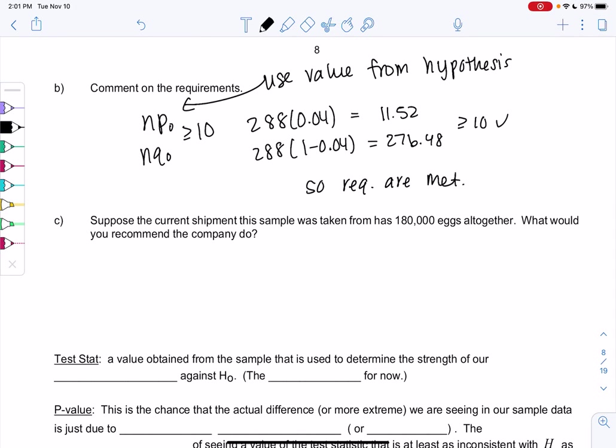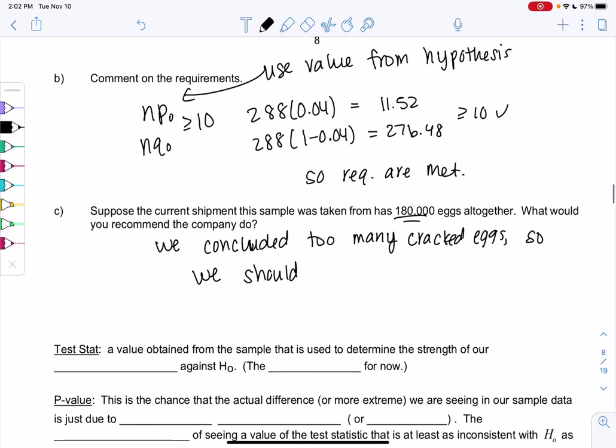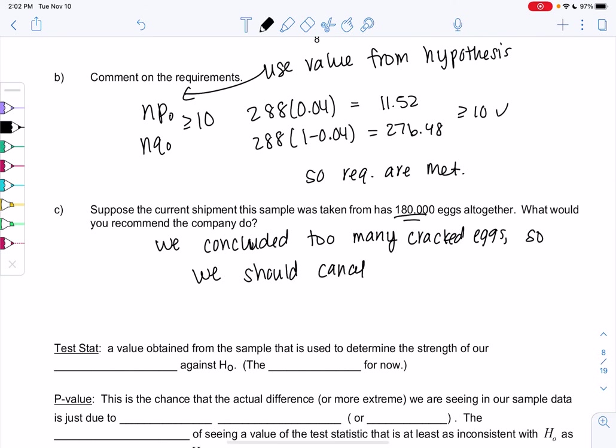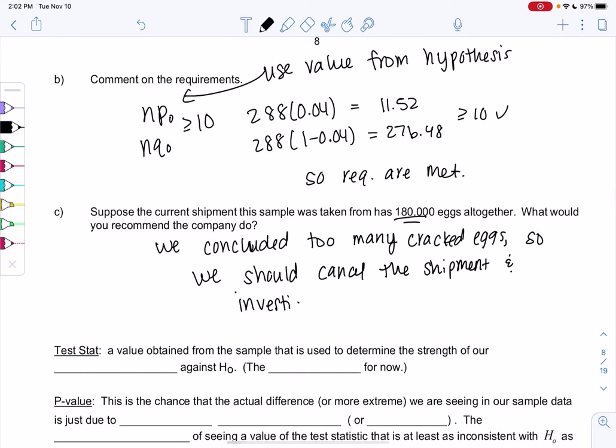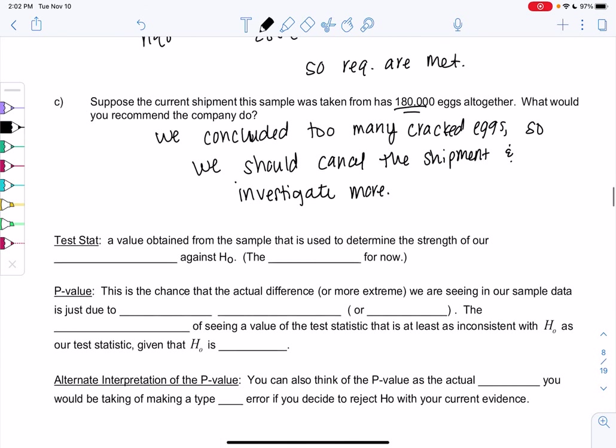Suppose your current shipment was taken from a sample of 180,000 eggs altogether. What would you recommend the company do? We concluded that they're sending too many cracked eggs. So we probably shouldn't send this shipment out. We probably should cancel this shipment. Maybe we would take another sample just to make sure it's not random. But we should cancel the shipment and investigate. Statistics tells me that there's too many cracked eggs, but maybe not why.